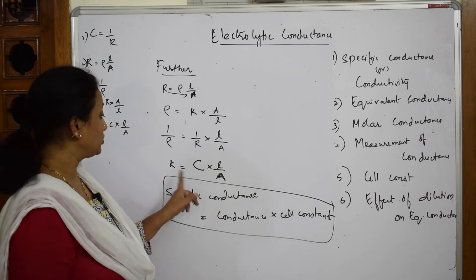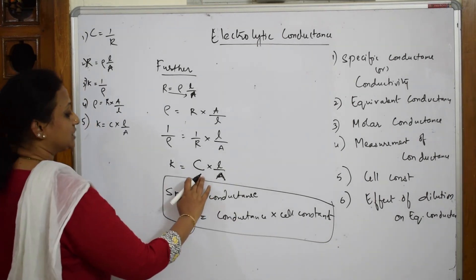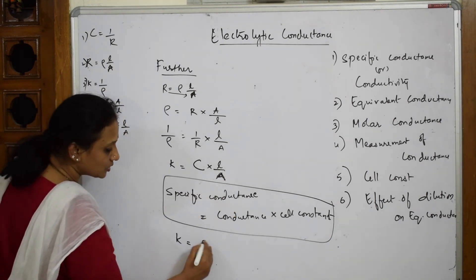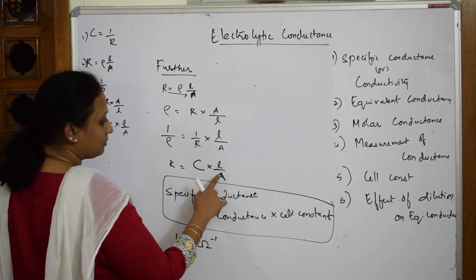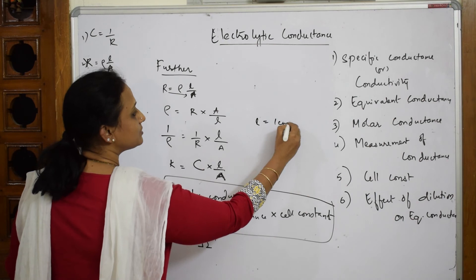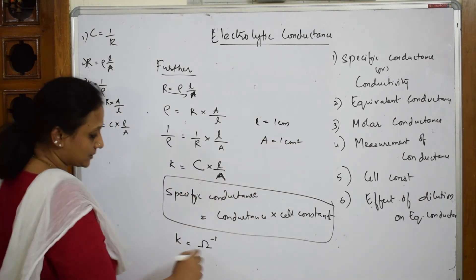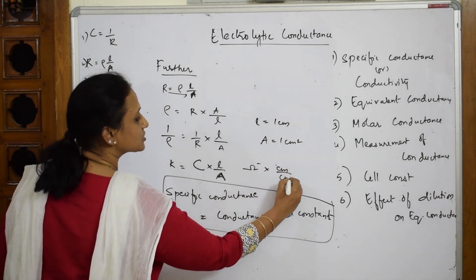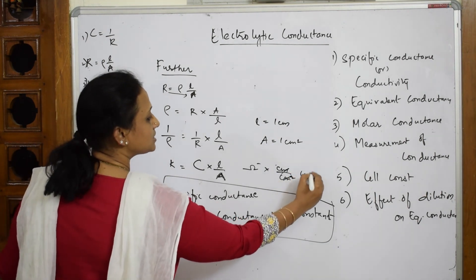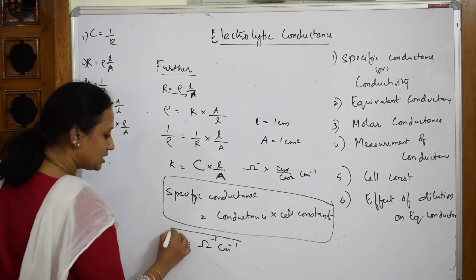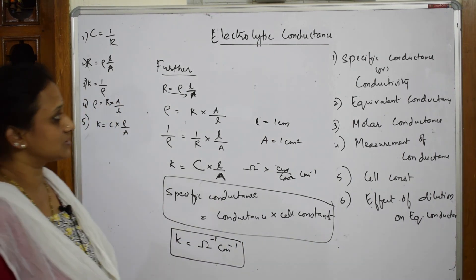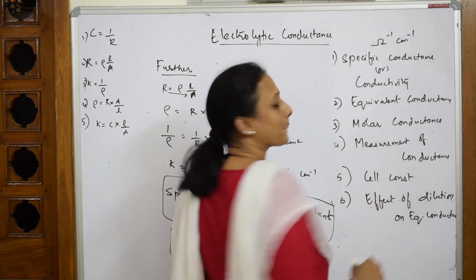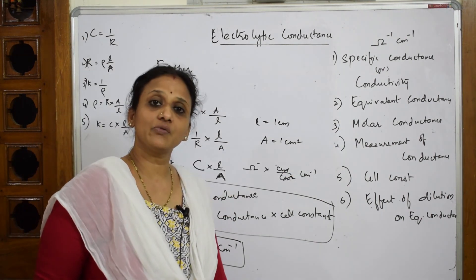Now let's write the units for specific conductance. The unit of conductance is ohm⁻¹, and L/A gives centimeter divided by centimeter squared, which simplifies to centimeter⁻¹. Therefore, the unit for specific conductance is ohm⁻¹ cm⁻¹. Now let's move on and learn about equivalent conductance.